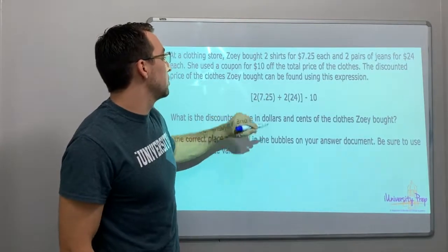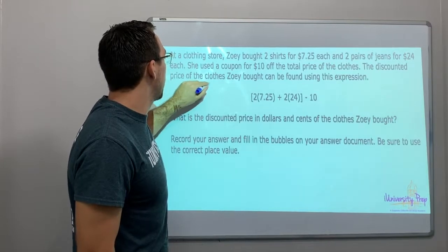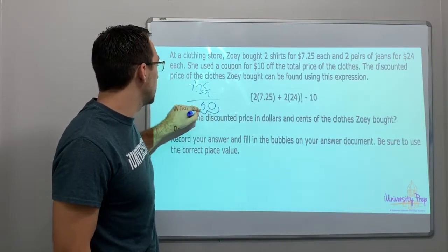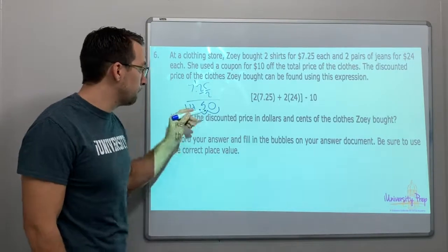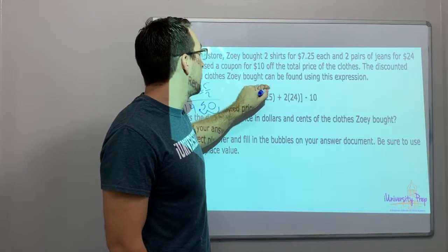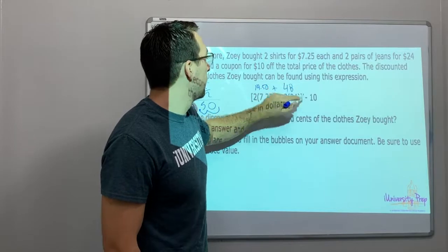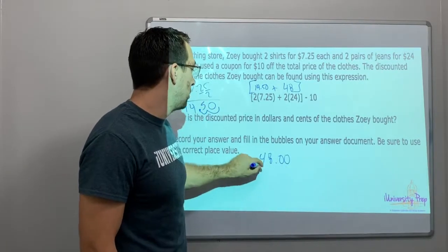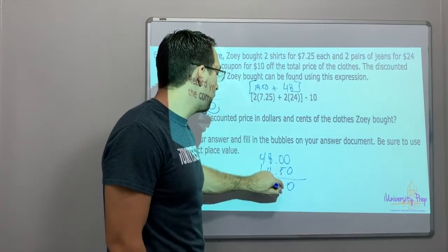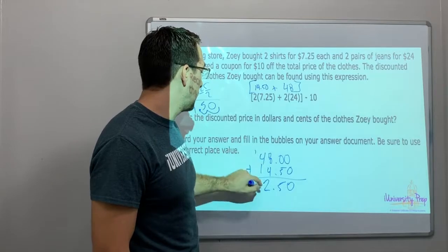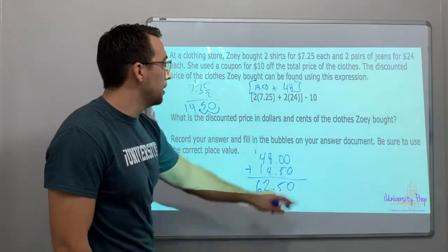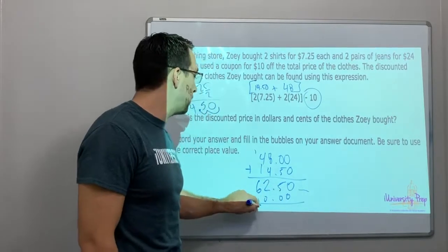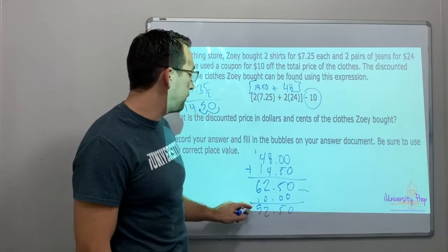Two times seven twenty-five: seven twenty-five times two equals fourteen fifty. Plus two times twenty-four is forty-eight. Now inside our bracket: forty-eight plus fourteen fifty. Keeping the decimal aligned — forty-eight is 48.00, plus 14.50 — that gives us sixty-two fifty. Then we minus ten dollars. Sixty-two fifty minus ten dollars equals fifty-two fifty. Our answer is $52.50.